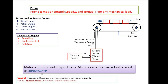Now let us understand the term 'control' which we often use in electric drives. The term control means either increasing or decreasing the magnitude of a particular quantity. For example, speed control means either increasing or decreasing the value of speed; voltage control means either increasing or decreasing the value of voltage.